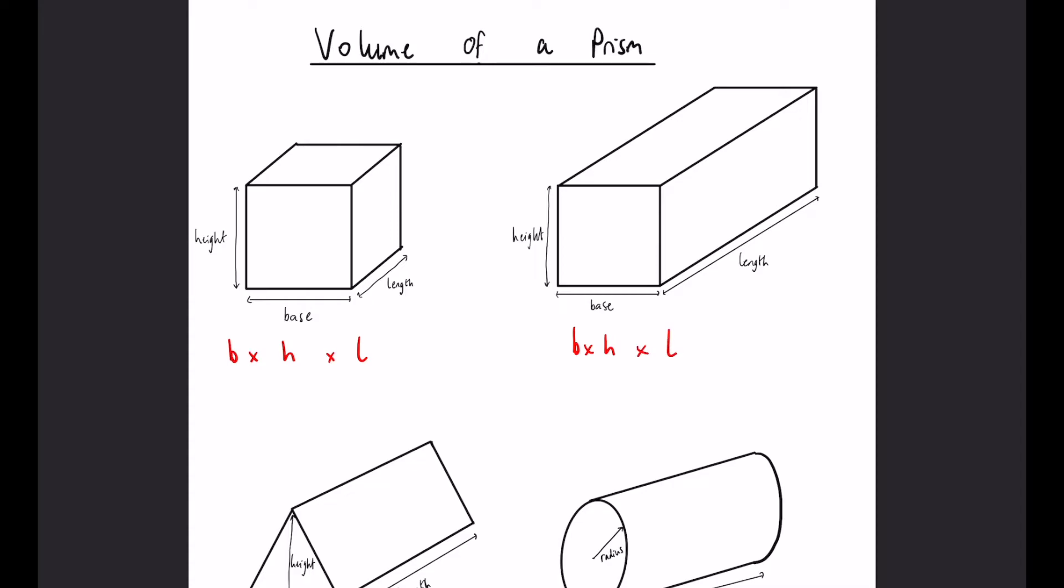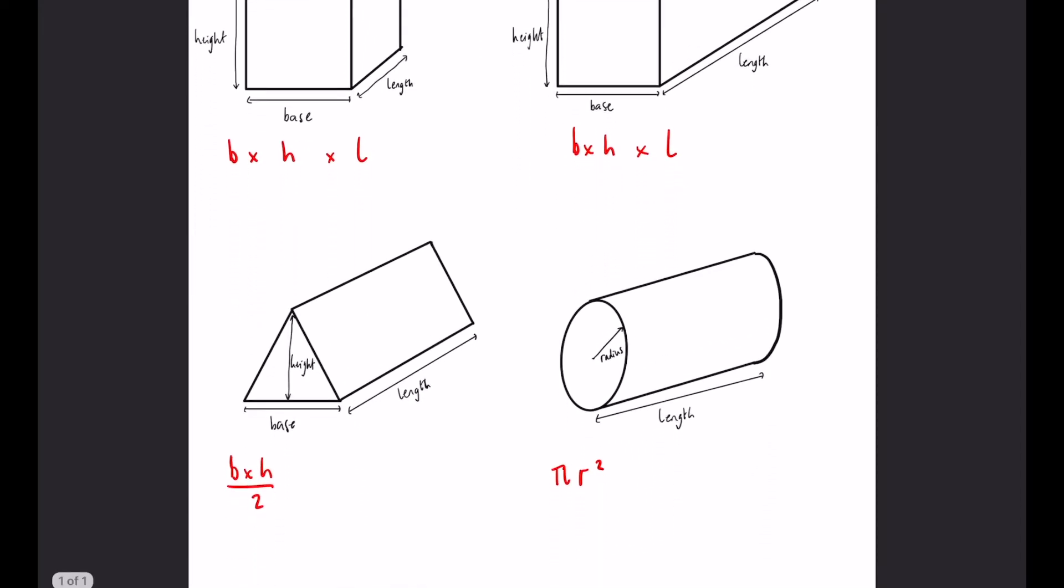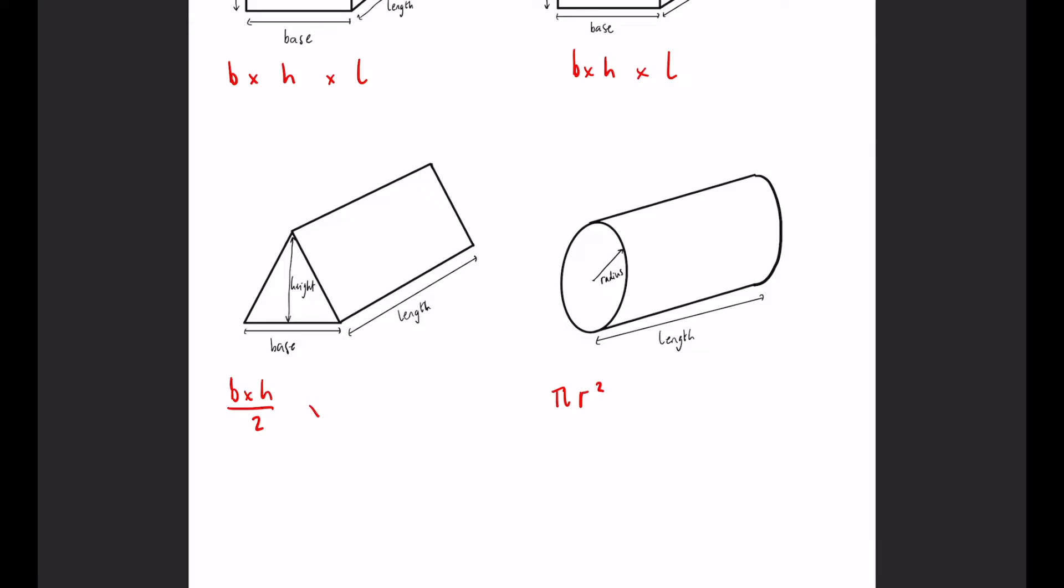Base times height times length for those two. This one will be base times height over 2 times the length, and πr² times the length.